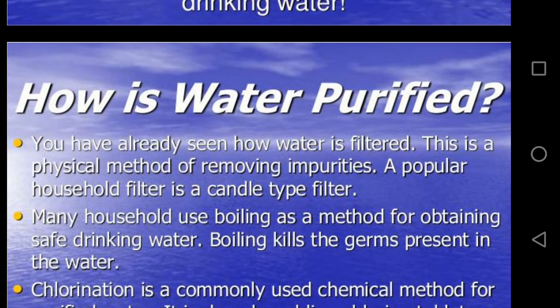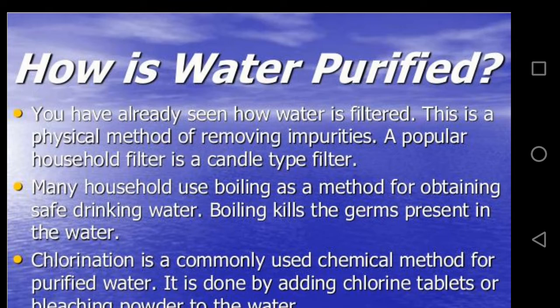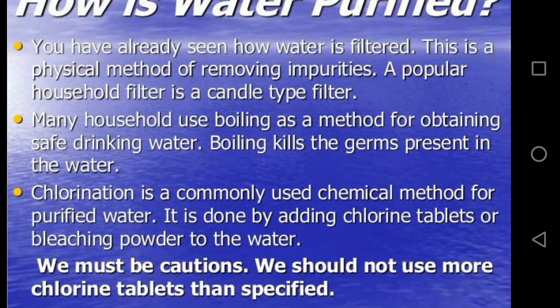How is water purified? Filtration is a physical method of removing impurities. A popular household filter is the candle-type filter. Many households use boiling as a method for obtaining safe drinking water because boiling kills germs present in water. Chlorination is a commonly used chemical method for purifying water, done by adding chlorine tablets or bleaching powder to the water. We must be cautious not to use more chlorine tablets than specified.